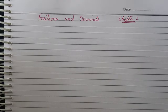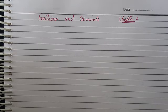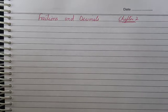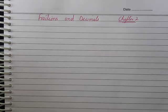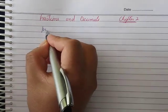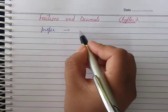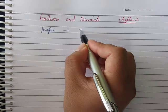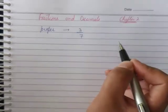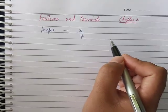The first topic in this chapter is the proper fraction. A proper fraction is one where the numerator is smaller than the denominator. For example, 3 by 5 is a proper fraction.